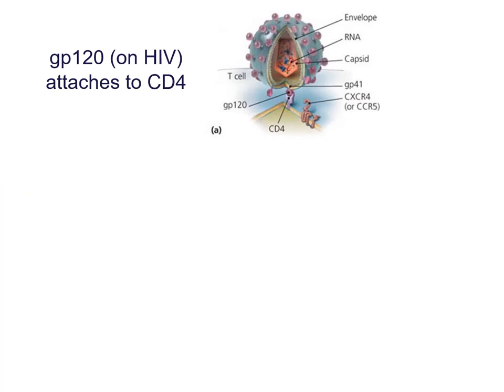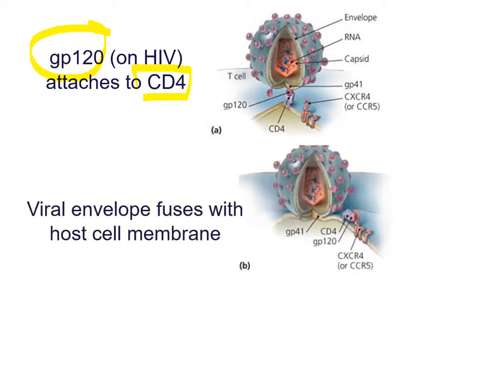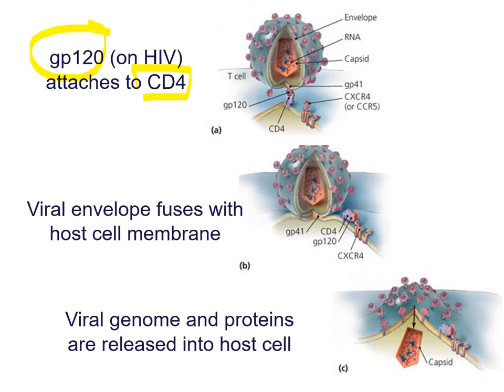Glycoprotein 120 is very important because it recognizes a specific receptor on white blood cells called a CD4 receptor, which is part of a special type of white blood cell called the T lymphocyte or CD4 cell. The virus recognizes the receptor, then the viral membrane fuses with the host cell membrane. The virus leaves its envelope behind and the capsid and viral genetic material go inside the cell.